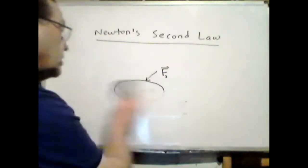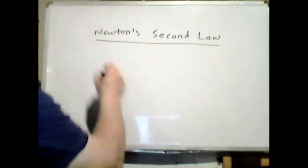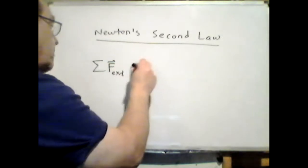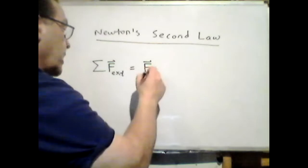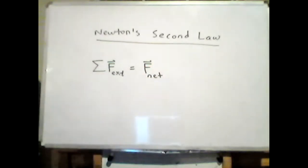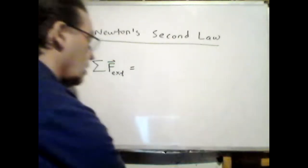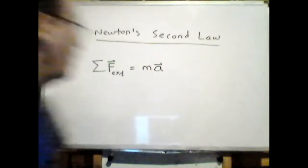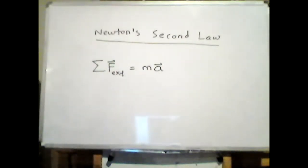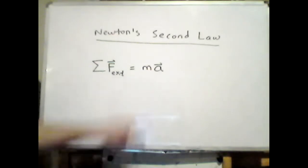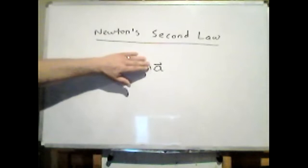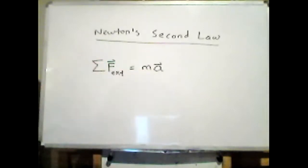Newton's second law says: take all of those external forces and add them up as vectors, just like in the vectors lab. The sum of all external forces — the net force — equals the mass of the system times its acceleration. This is nothing short of a miracle. This one equation tells you that all the work done by Galileo is on the right-hand side: if you know a body's acceleration, you can use the equations for constant acceleration to tell you where the body will be and how fast it's going.